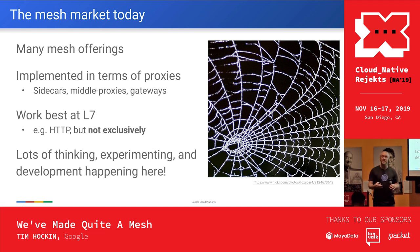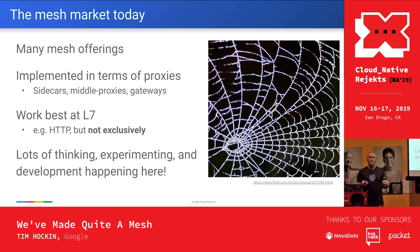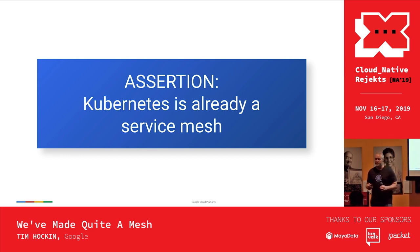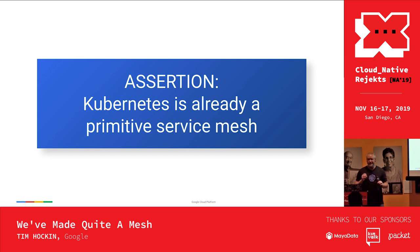Typically when we talk about a proxy we talk about L7 — HTTP or application-level awareness. There has been, in the last three years, a ton of thinking, R&D, and experimenting happening around service mesh. It's really exciting. It's completely decoupled from Kubernetes — Kubernetes users tend to want service mesh, but it's not part of Kubernetes. So my assertion is: we already have a service mesh. We have, not really on purpose, built a service mesh.